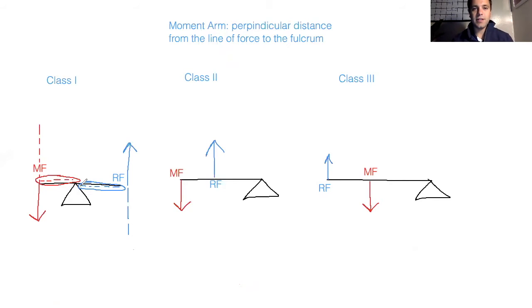Again, the MF represents the muscle force and the RF represents the resistive force. Now what makes this a class one lever is the fact that the muscle force and the resistive force are on opposite sides of the fulcrum. So the fulcrum is going to be in the middle in this example.